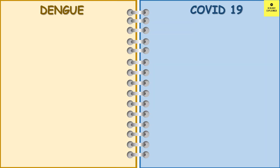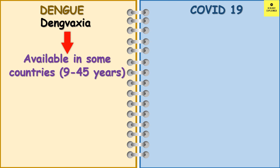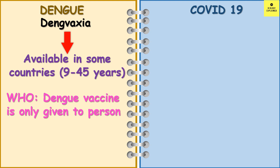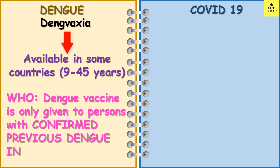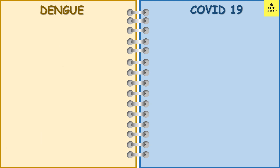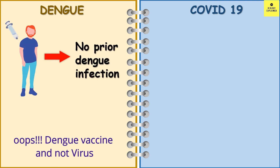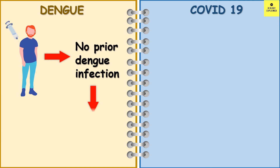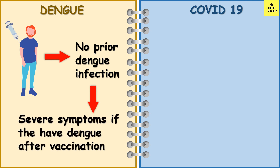The vaccine to prevent dengue is called Dengvaxia, and it is available in some countries for people aged between 9 to 45. According to WHO guidelines, the dengue vaccine is only given to persons with confirmed previous dengue virus infection. The vaccine manufacturer announced in 2017 that people who received the dengue vaccine but did not have any prior dengue infection may develop severe dengue if they get dengue after vaccination. So the dengue vaccine is not very popular till date.